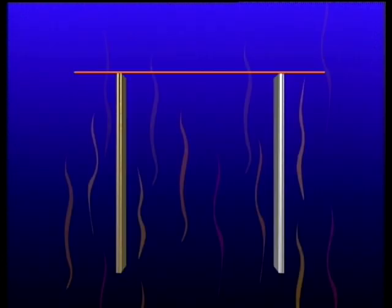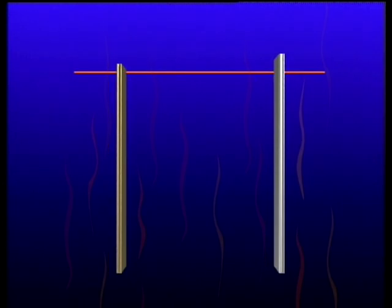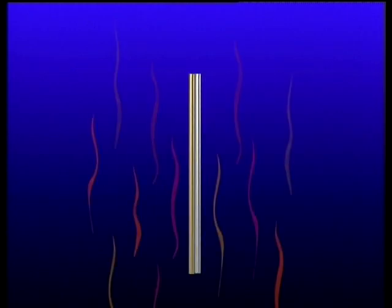This animation shows an exaggerated view of the different expansion of the separate metals as they are heated. When they are bonded together, the difference in expansions makes the strip curve.